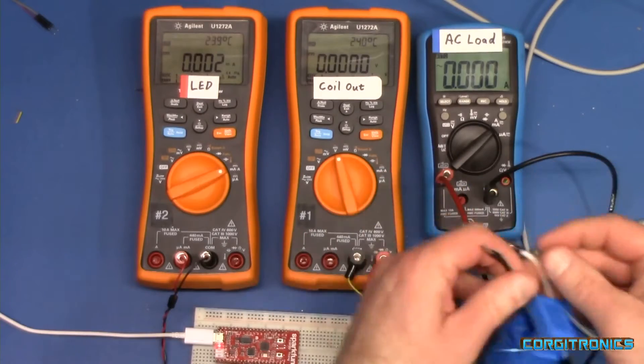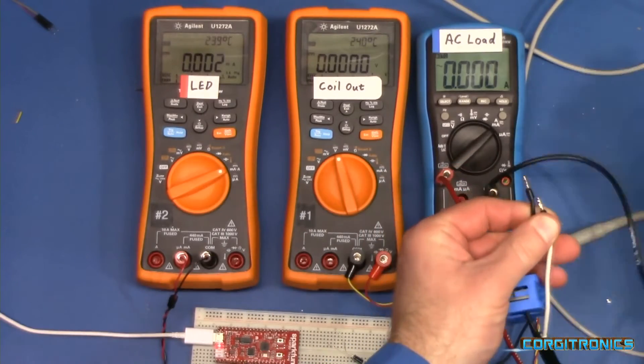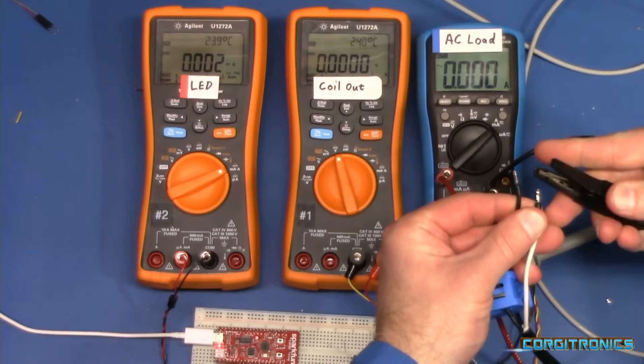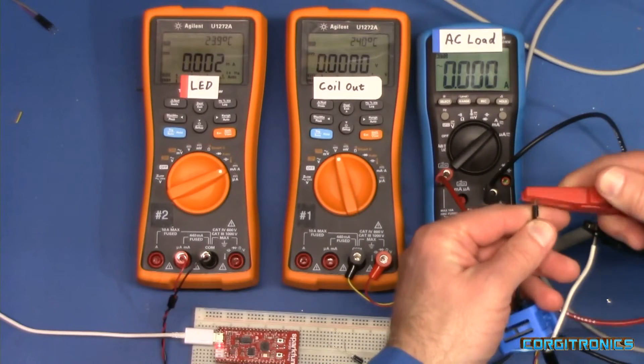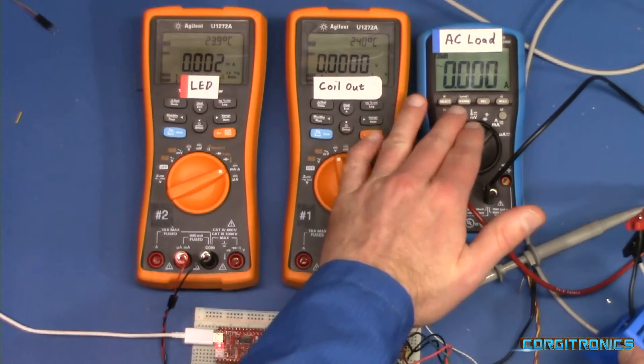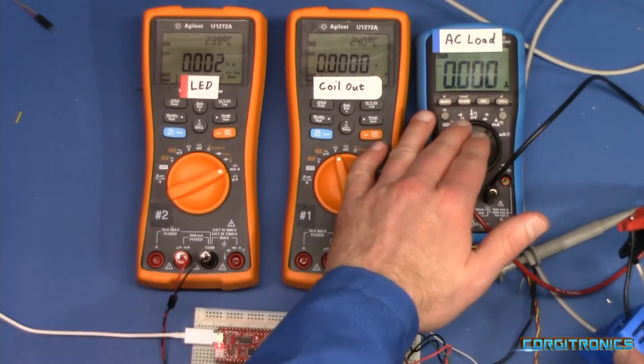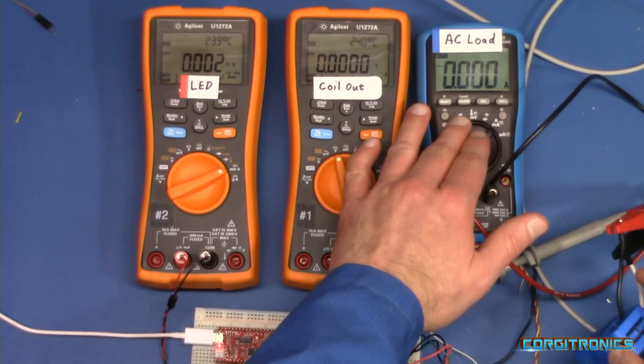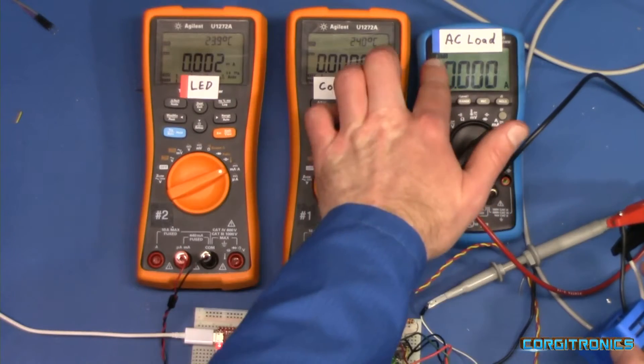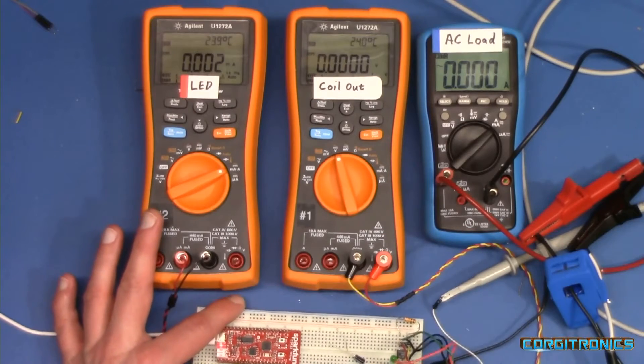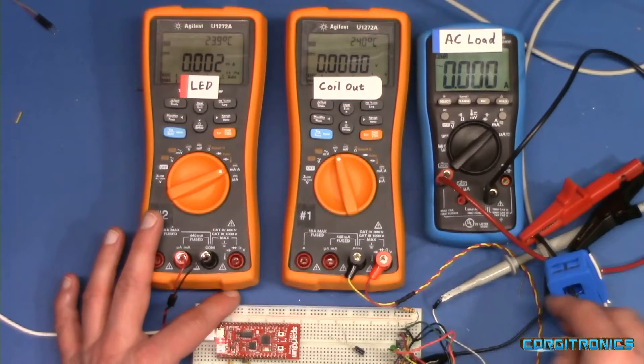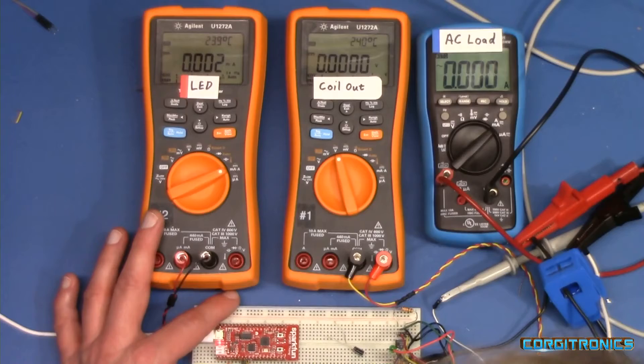So we're going to hook up our current transformer. We will also monitor the output or the amount of current flowing through it using this blue EEVblog meter, and it is set to amps RMS. So we're set to AC amps. Then we're going to monitor the output of this current transformer.